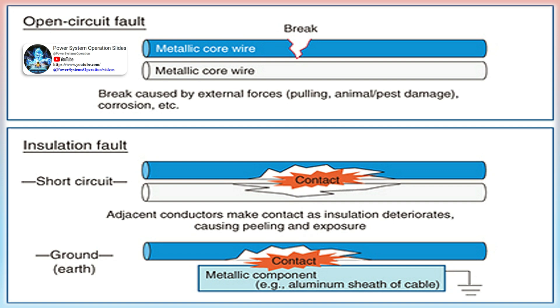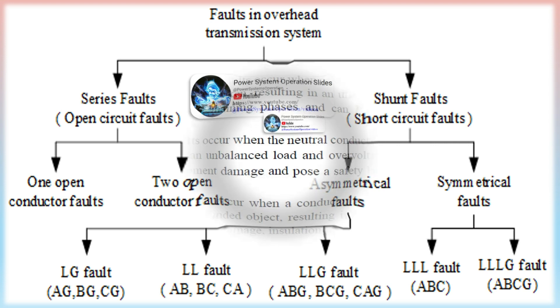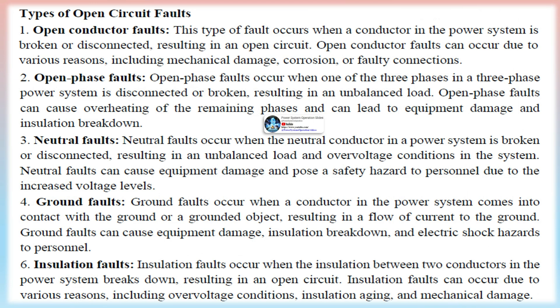Various techniques are used to detect open-circuit faults in power systems. Regular visual inspections can help identify potential faults including broken or loose conductors, damaged insulation, or faulty connections. Voltage and current measurements can detect open-circuit faults, as levels change when a fault occurs — for example, an open-phase fault can result in a lower voltage level in one of the phases. Impedance measurements can also detect open-circuit faults, as a fault results in increased impedance, measurable using time-domain reflectometry or frequency-domain techniques. Power quality monitoring can detect faults through changes in parameters such as power factor and harmonics.